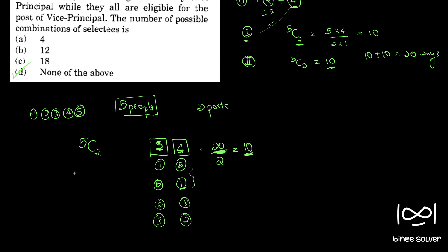In 5C2 what we do is, to get this we need 5 into 4 right. So for that we do 5 factorial and divide with 5 minus 2 factorial which is 3 factorial, and then to remove the duplicates we divide with 2 factorial.